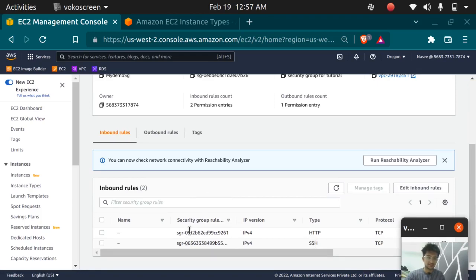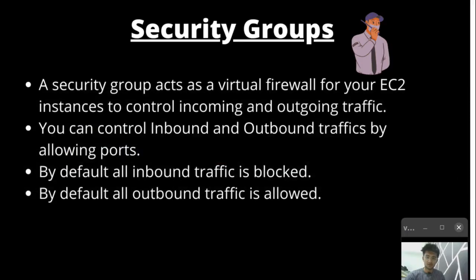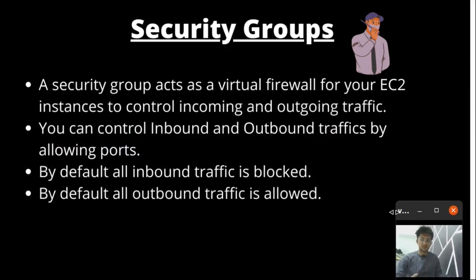Whenever you attach this security group to any instance, it will have access to connect to the instance and will have HTTP access as well. By default, all inbound traffic is blocked. Whenever you create a new security group, you need to add inbound rules. By default, all outbound traffic is allowed. You can also attach more than one security group to a single instance.